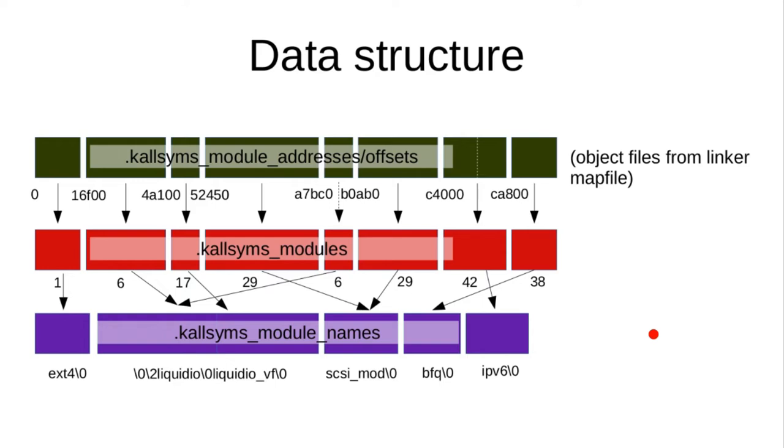Almost everything is just per-something — almost everything is per-CPU allocated. There are very few true global symbols.